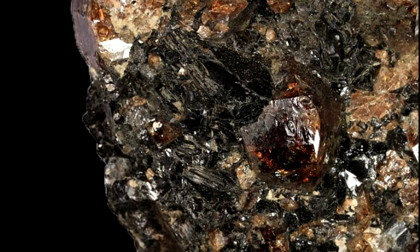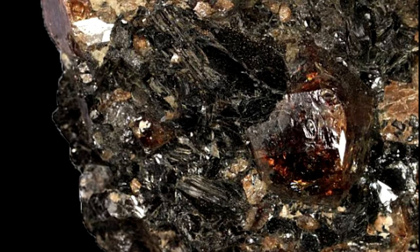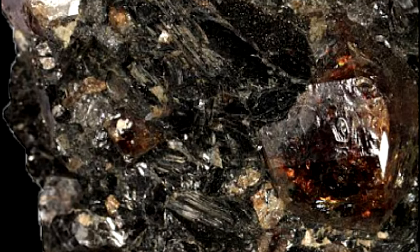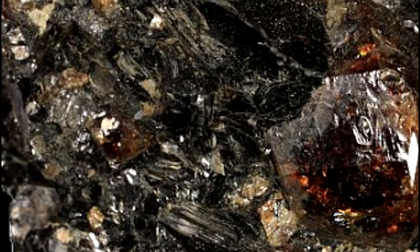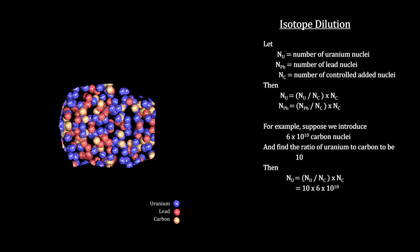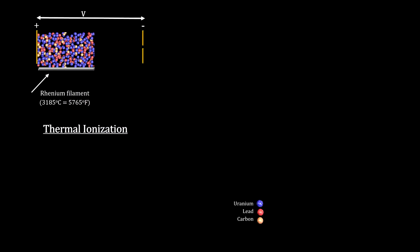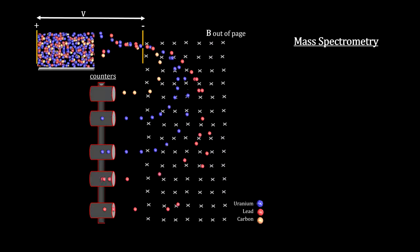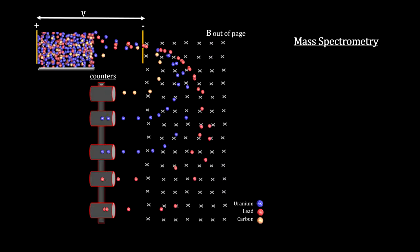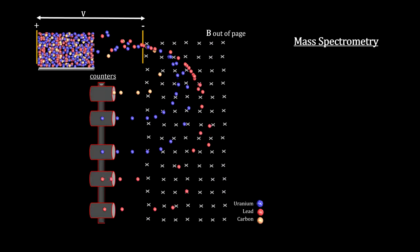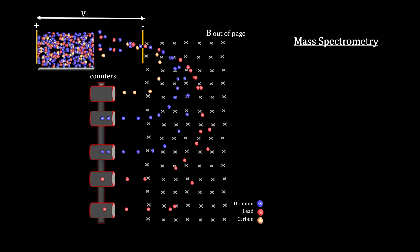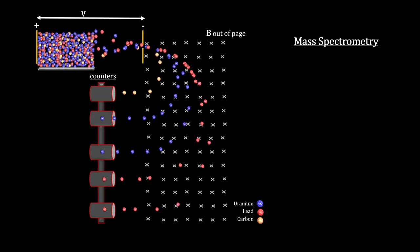Producing high precision ratios of uranium to lead in a zircon crystal requires multiple steps, including isotope dilution, thermal ionization, and mass spectrometry, which we have just covered. To start with, there is a procedure called chemical abrasion to isolate the best zircon crystals in the rock.